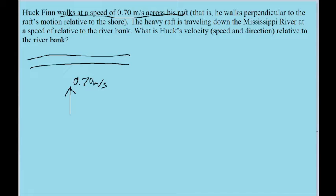It also mentions that the raft is traveling down the river at a speed relative to the bank. So let's say the river's flowing to the right, which means that this other speed is going to be pointing to the right relative to this, like a triangle. And this is a speed given as 1.50 meters per second.